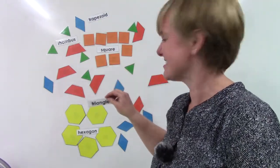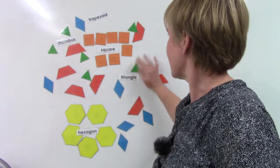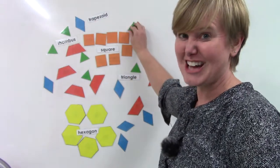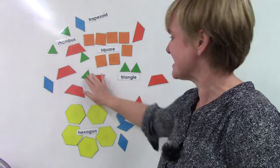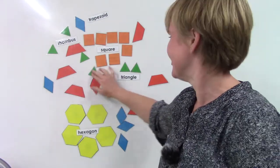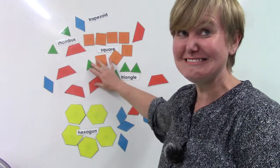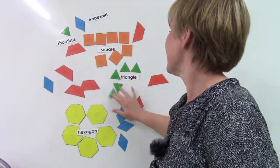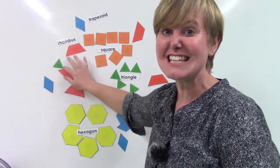Triangles are next. Our triangles in our pattern blocks are green. And do you know how many sides they have? I know you do. Yell it out. One, two, three. Triangles have three sides.